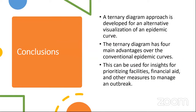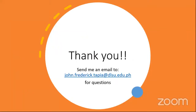In conclusion, the ternary diagram gives insights for planning, as we can see how we are doing in terms of our interventions — lockdowns, antivirals, and other interventions. I've outlined the four main advantages this approach has over epidemic curves. This can also be used for insights for prioritizing facilities and financial aid or other measures. If you have questions after this talk, please send me an email at the address shown. Thank you very much for your attention.